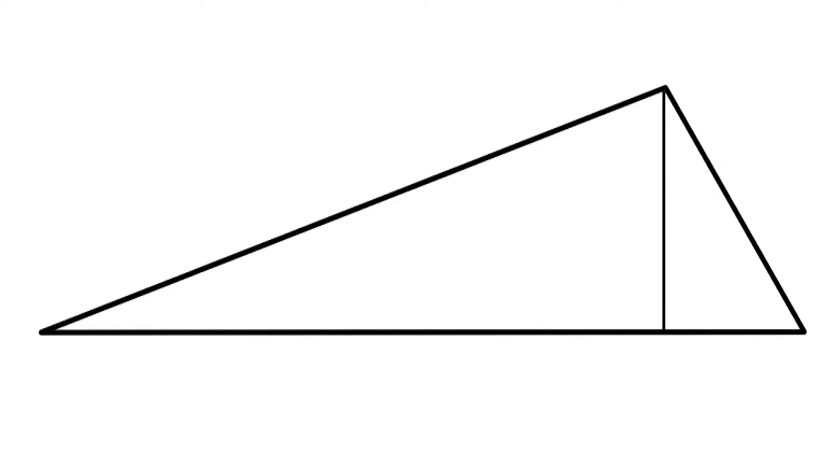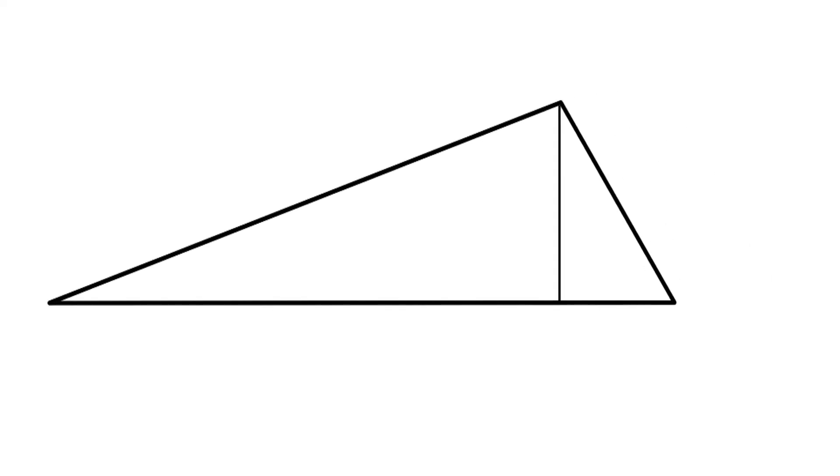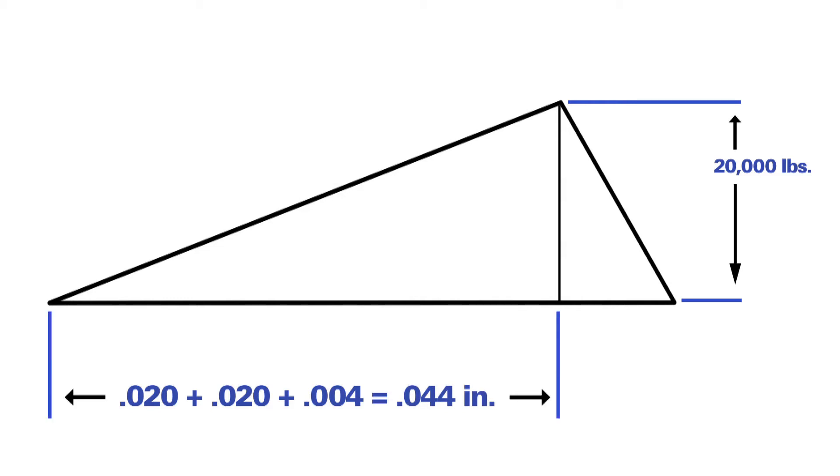Now let's take a look at the same gasket joint, only this one is live loaded with Belleville springs. In this case the load is still twenty thousand pounds. However, let's say that two Belleville springs are added and each has a deflection of twenty thousandths at twenty thousand pounds force. This would result in a total deflection of twenty plus twenty thousandths plus the original four thousandths of bolt stretch, for a total of forty-four thousandths of an inch.